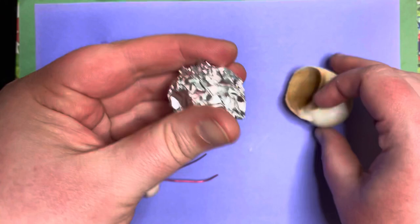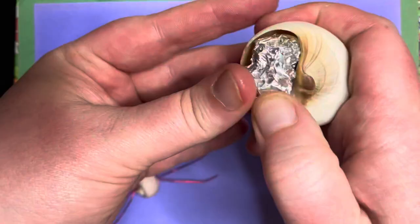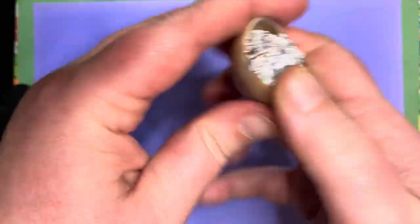So the foil we're going to take, crumple up into a ball, get it small enough to where it fits in the opening of your shell. Make sure that fits inside the opening.